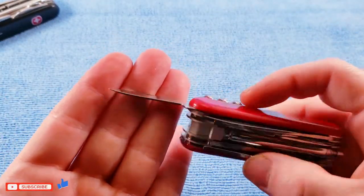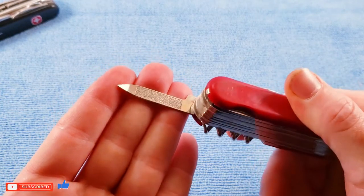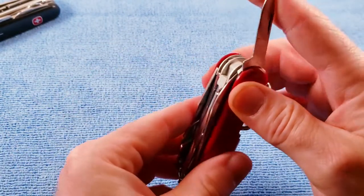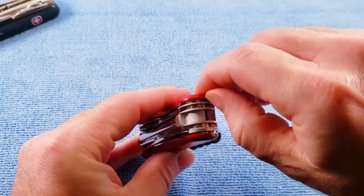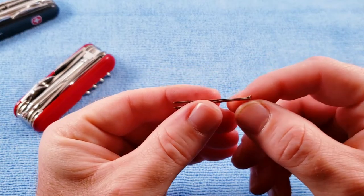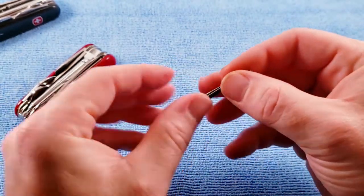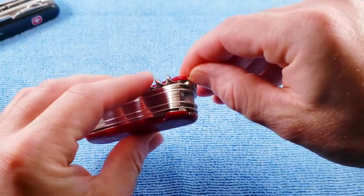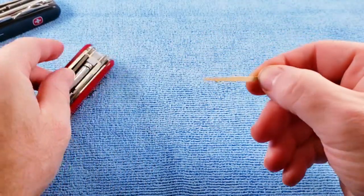We get the nail file nail cleaner. Then for scale tools we get tweezers and the toothpick.